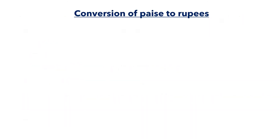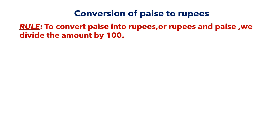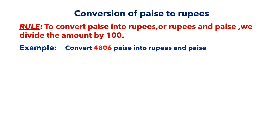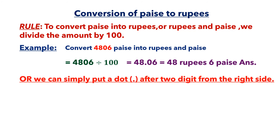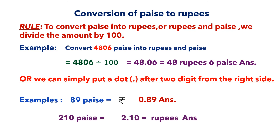The conversion of paise to rupees: to convert paise into rupees, divide by 100. For example, 4806 paise gives 48.06 rupees, which is 48 rupees and 6 paise. Or you can simply put a dot after two digits from the right side. So 89 paise is 0.89 rupees, and 210 paise is 2.10 rupees, or 2 rupees and 10 paise.